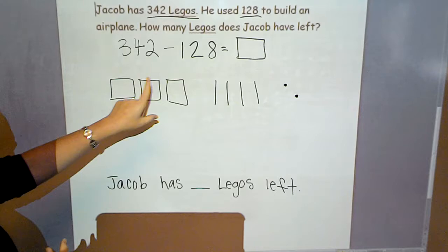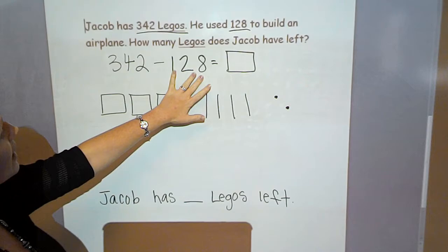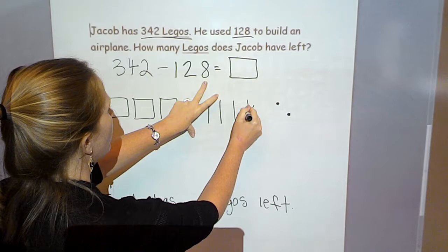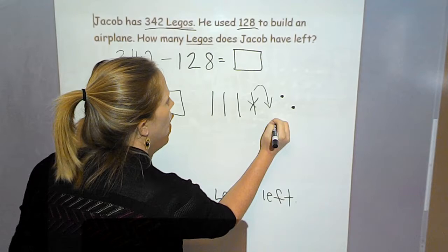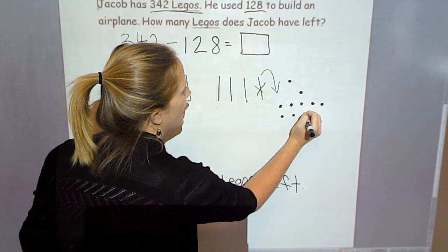So I'm going to start taking away my eight ones. But I have two ones. So I've got to break apart a 10. And if I break that 10 apart, I know I get 10 ones. 1, 2, 3, 4, 5, 6, 7, 8, 9, 10. Now I can subtract my eight ones.